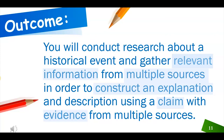Let's go back and look at our job today. You will conduct research about a historical event and gather relevant information from multiple sources in order to construct an explanation and description using a claim with evidence from multiple sources. We had two sources: both our map and our chart of the inventions — multiple sources means more than one. We made a claim, we provided evidence for our claim, and then we constructed an explanation through reasoning. So we were successful with our job today. Thank you for joining me.